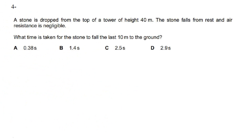For this question, a stone is dropped from the top of a tower of height 40 meters. The stone falls from rest and air resistance is negligible. We need to find the time taken for the stone to fall the last 10 meters to the ground — not the total time. The best approach is to sketch this situation: the stone is dropped from the top with initial velocity equal to zero.